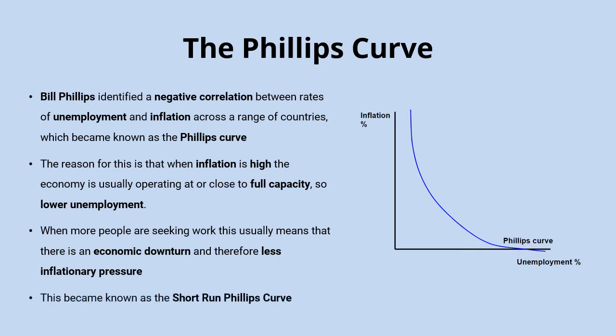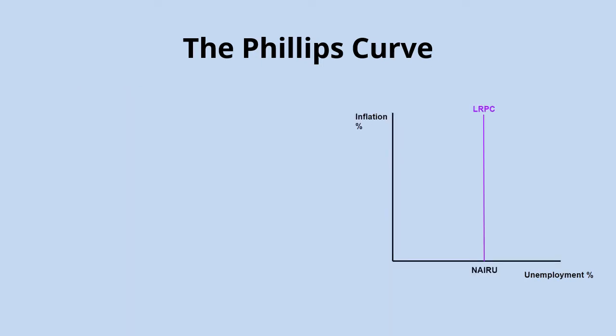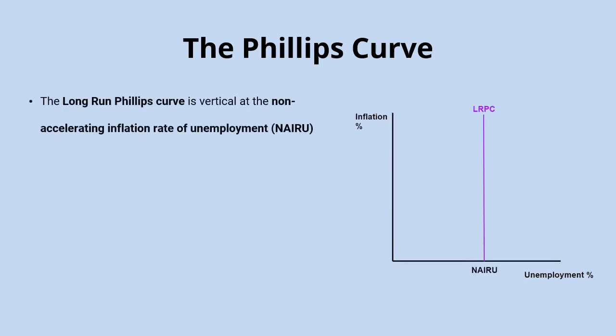It was quickly pointed out that this relationship only really held in the short run, and so it became known as the short-run Phillips curve. The long-run Phillips curve is argued to be vertical at what's known as the non-accelerating inflation rate of unemployment, or NIRU.